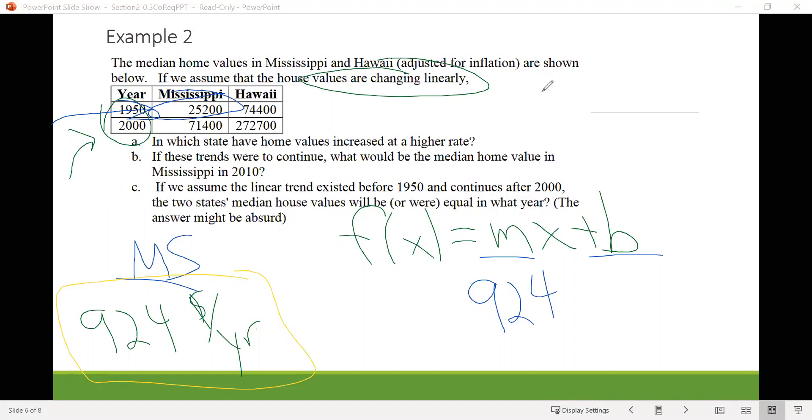Because recall that we said that 1950 was our starting year. Then another way to think about B here is the starting value. So in our calculations here, the starting value for the home prices in Mississippi was 25,200. So that's going to be our value for B. And then we can use X and F of X, but notice that the variables we're working with are home values and years. So I'm actually going to use, instead of X, I'm going to use Y as my input value to represent years, and then V as my output value to represent home values. So we have V of Y equals 924Y plus 25,200.